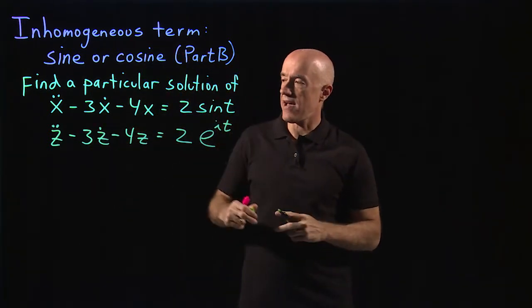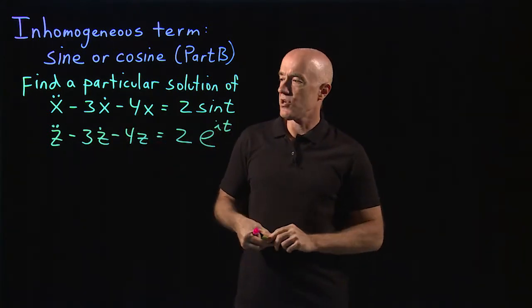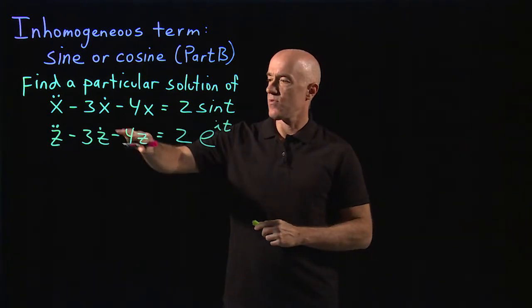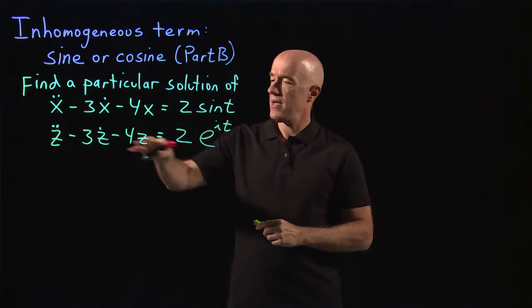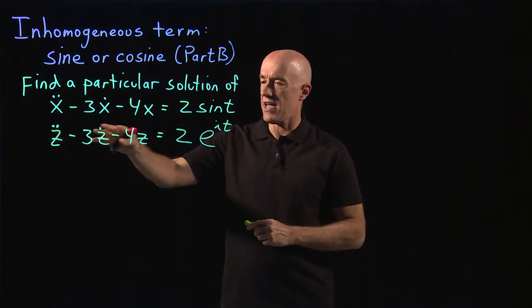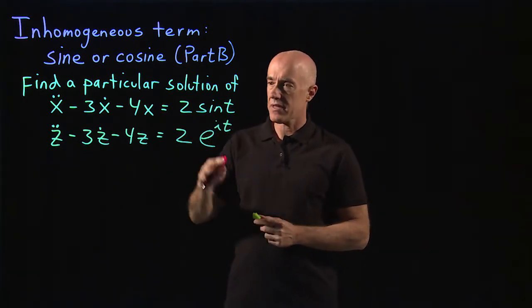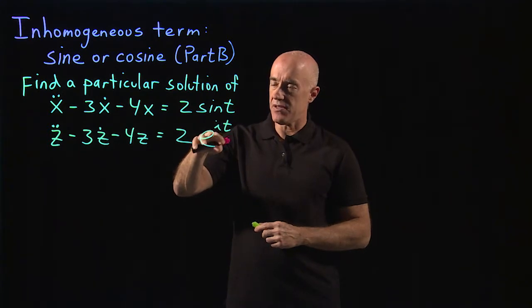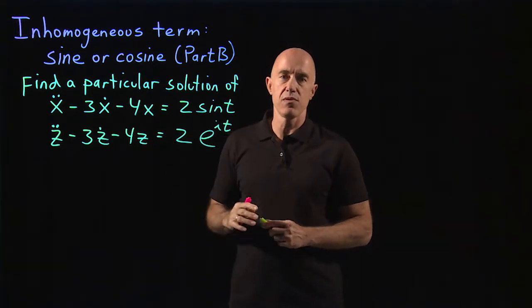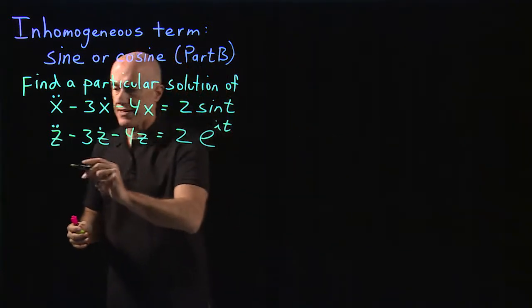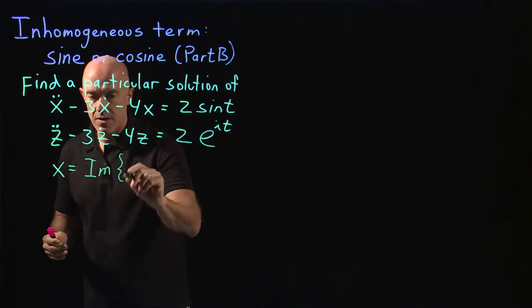Remember that if you have a complex expression equals a complex expression, you can always set that as two equations. The real part of the left hand side equals the real part of the right hand side, and the imaginary part of the left hand side equals the imaginary part of the right hand side. Because the imaginary part of e to the it equals sine t, the imaginary part of z will be what we look for. So x here is going to be equal to the imaginary part of z.